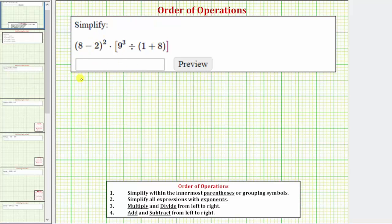We want to simplify or evaluate the expression: the quantity eight minus two squared times the quantity nine cubed divided by the quantity one plus eight.